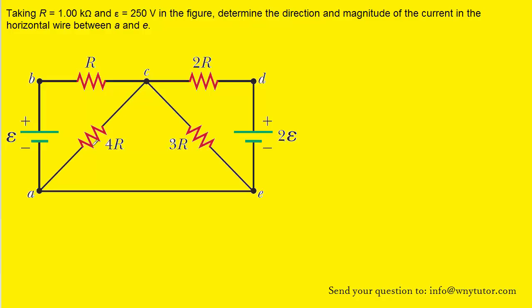What we're going to do first in the section of the circuit that's marked AC — this segment right here — is draw a current that's flowing through that segment. We can draw that current in any direction that we choose, so we'll just arbitrarily make the current go this way, and we can label that current I1. In a similar manner for the segment marked CE, we can draw a current flowing in this direction and label that current I2.